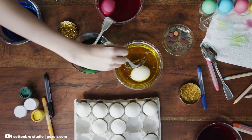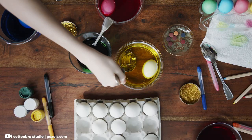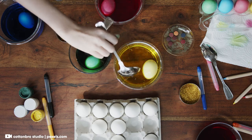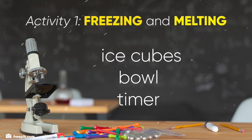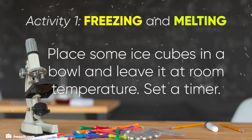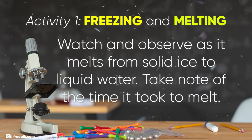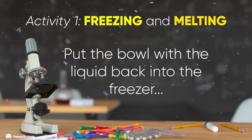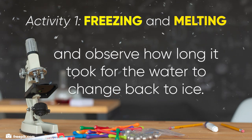Now that we've talked about physical changes, let's look at a few simple activities you can try at home. Activity 1: Freezing and Melting. What you'll need: ice cubes and a bowl. Take an ice cube out of the freezer and leave it in a bowl at room temperature. Watch as it melts from solid to liquid, then put the liquid back into the freezer and observe it turn back into ice.